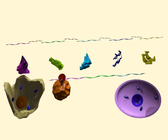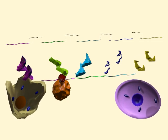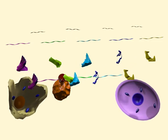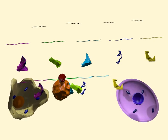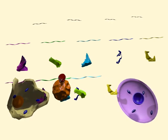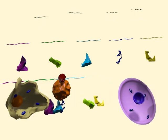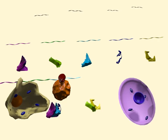Thus, two different cells can express the same gene, but produce different proteins from it. If different sets of exons are spliced together, the protein sections will vary from one cell type to another cell type, even though both of these proteins are the product of the same gene.